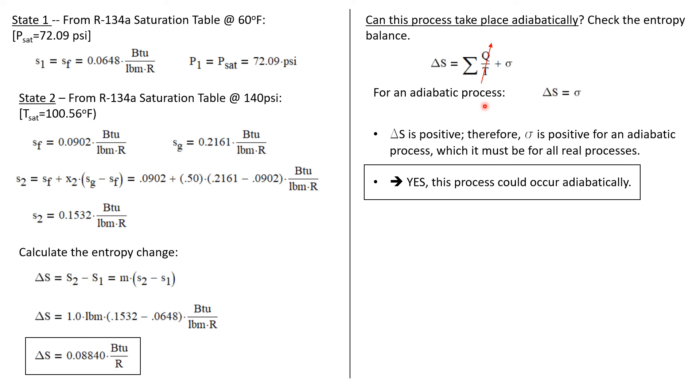Now because we're asked whether or not this process could take place adiabatically, let's assume that it's adiabatic. In that case Q would be zero, so this entropy balance would reduce to just ΔS equals σ. So the entropy only changes because entropy is produced.